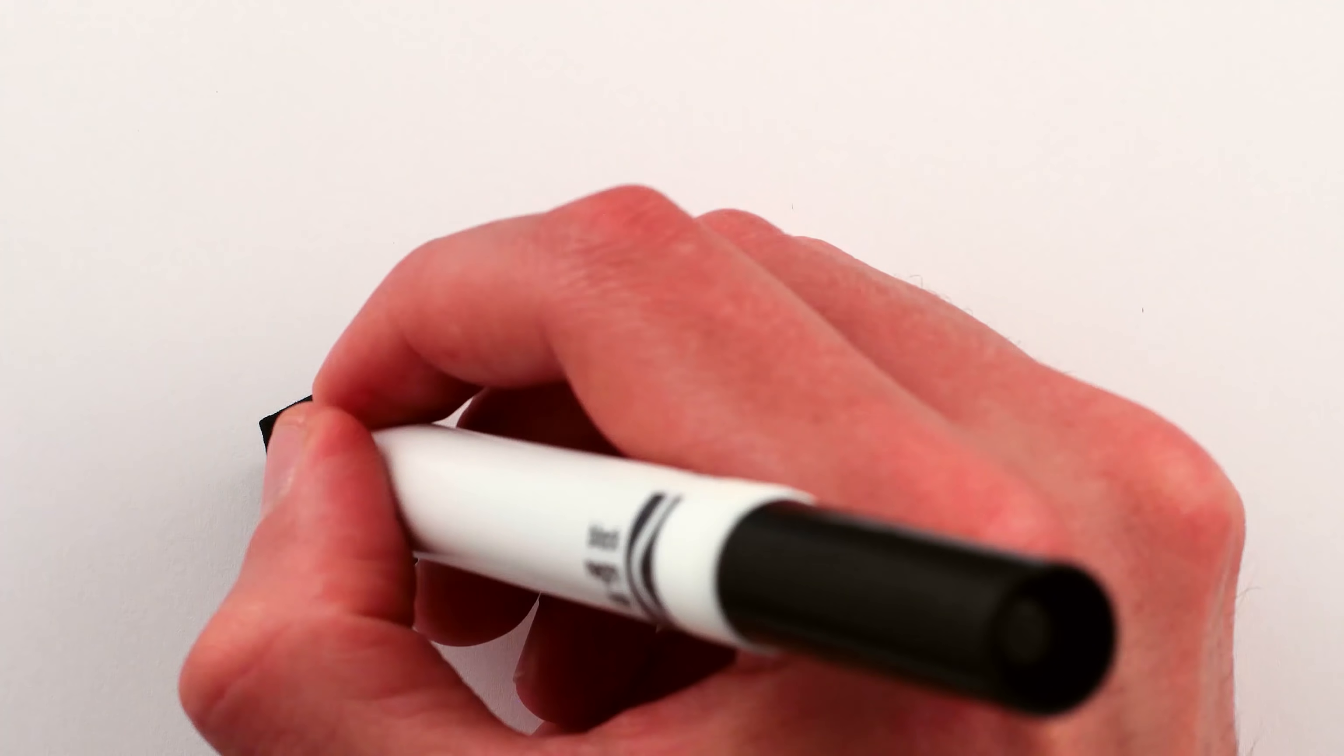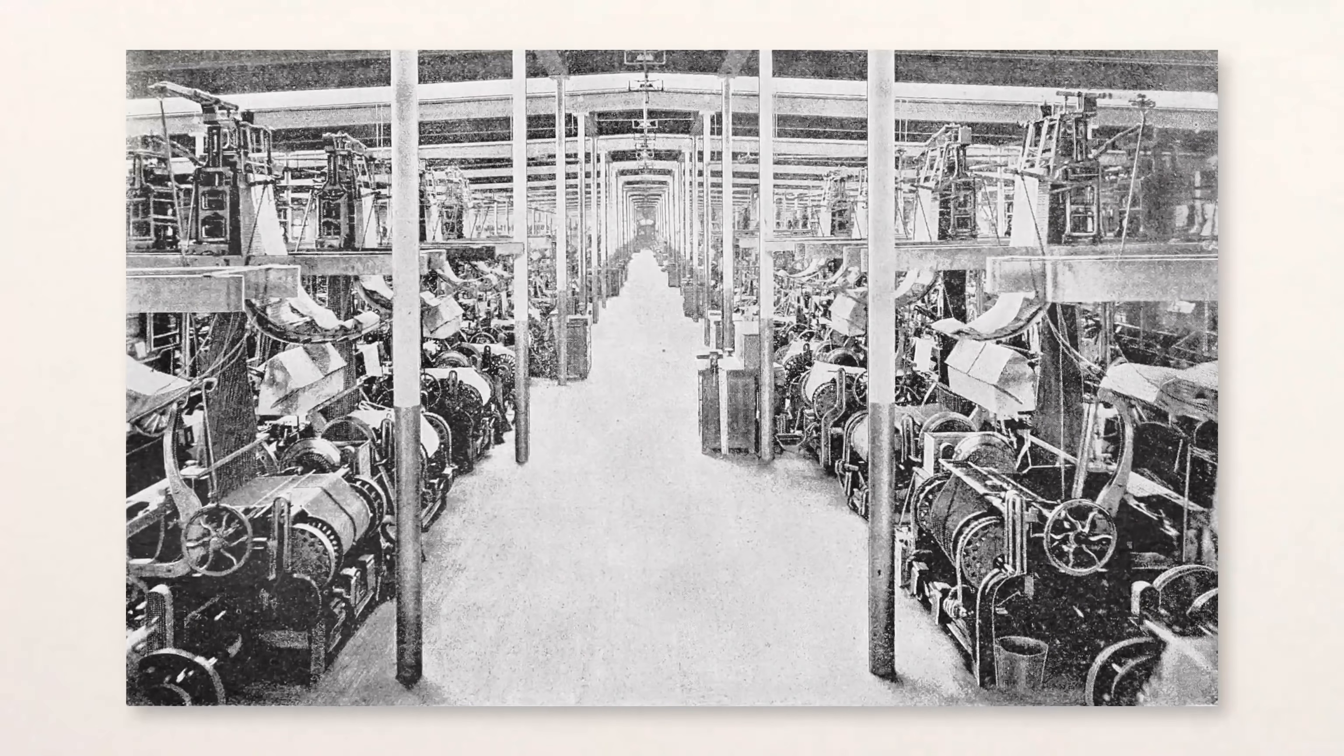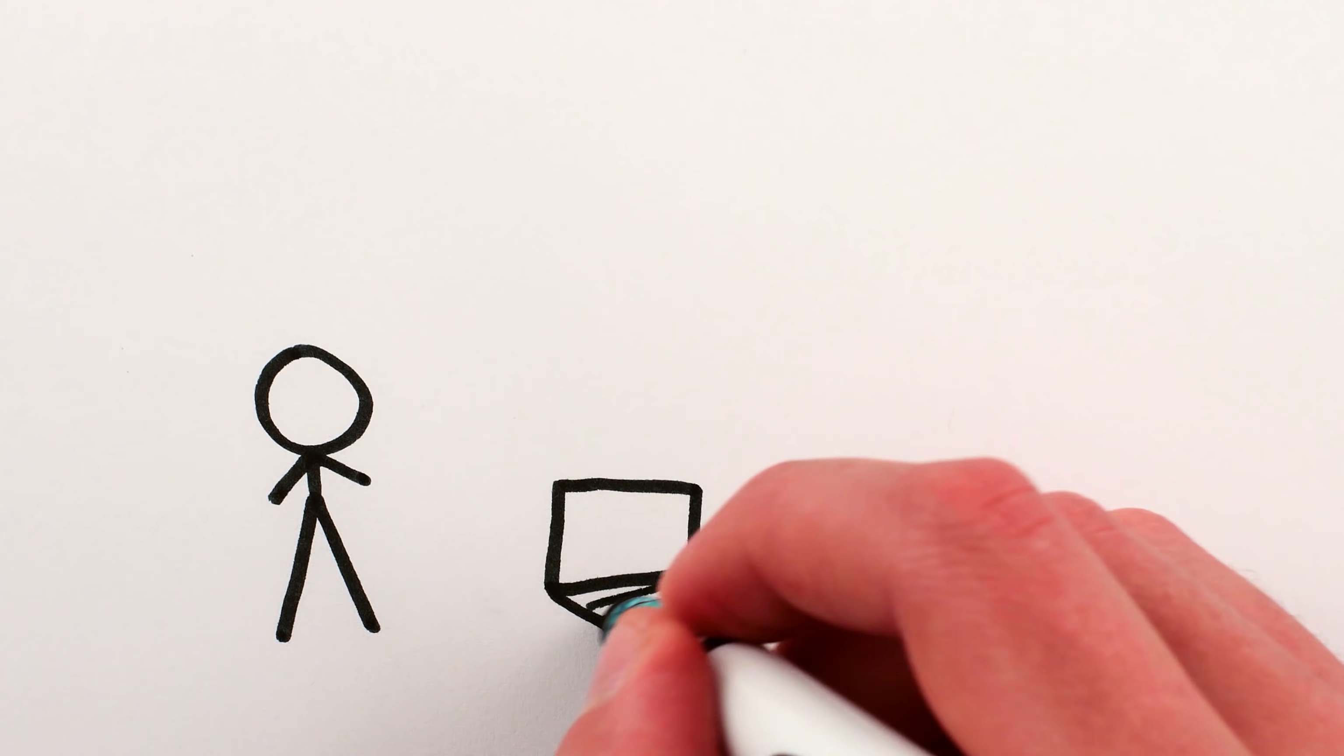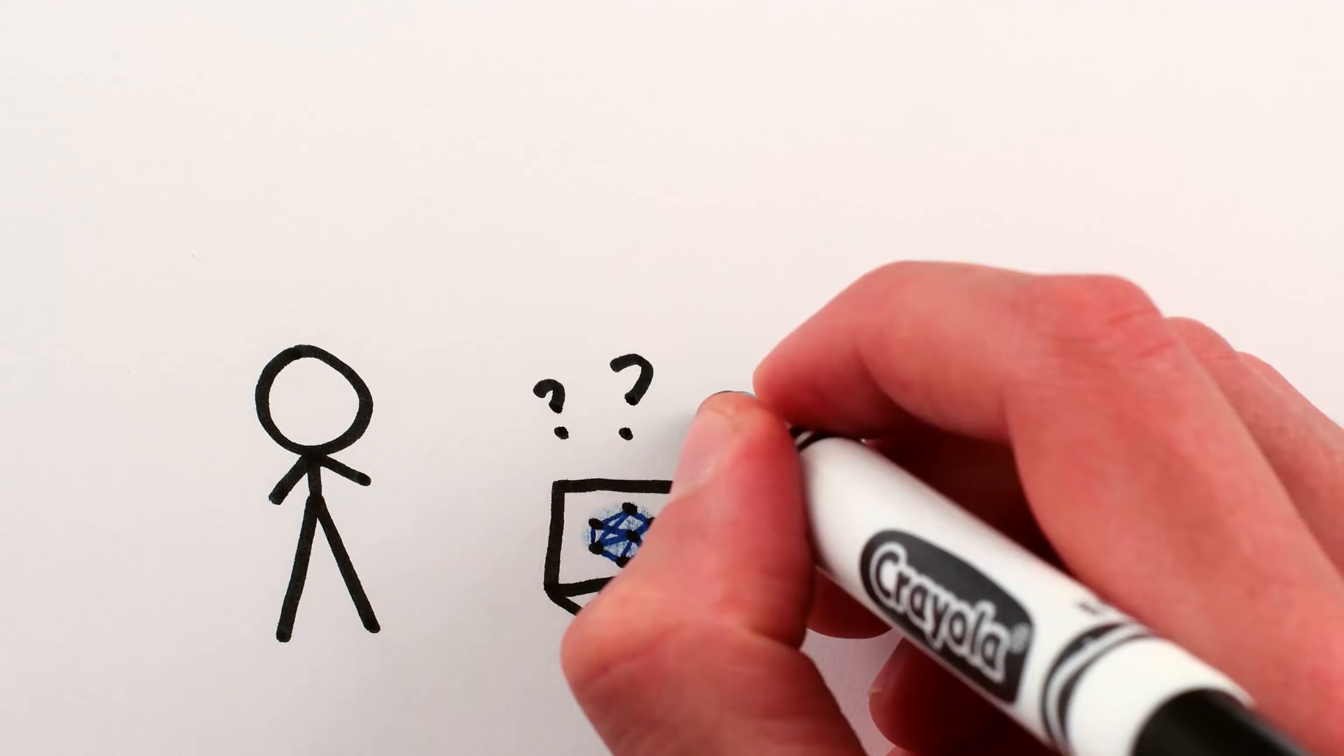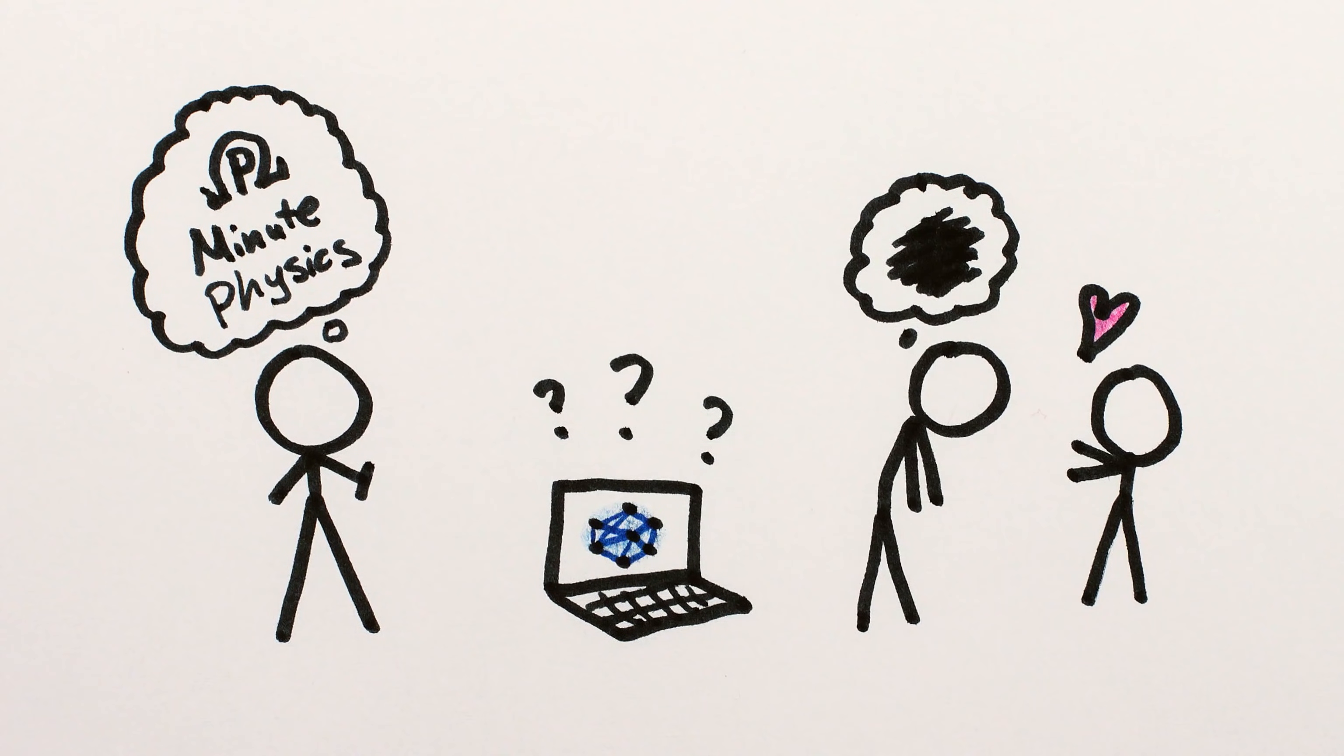First off, Max, machines, including computers, have long been better than us at many tasks, like arithmetic or weaving. But those are often repetitive and mechanical operations. So why shouldn't I believe that there are some things that are simply impossible for machines to do as well as people? Say, making minute physics videos or consoling a friend.